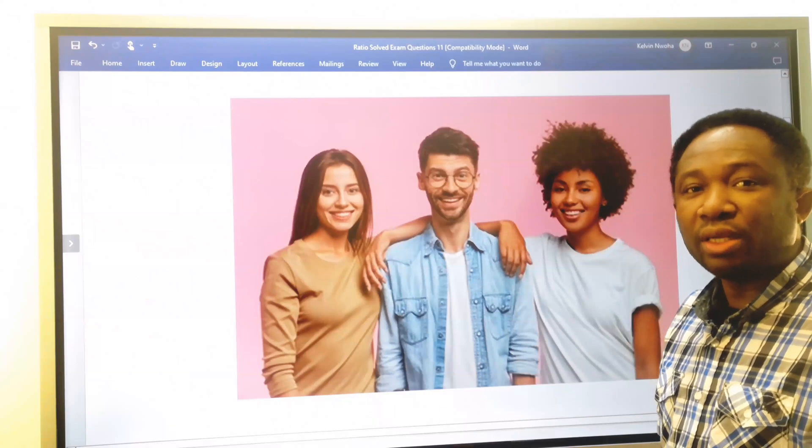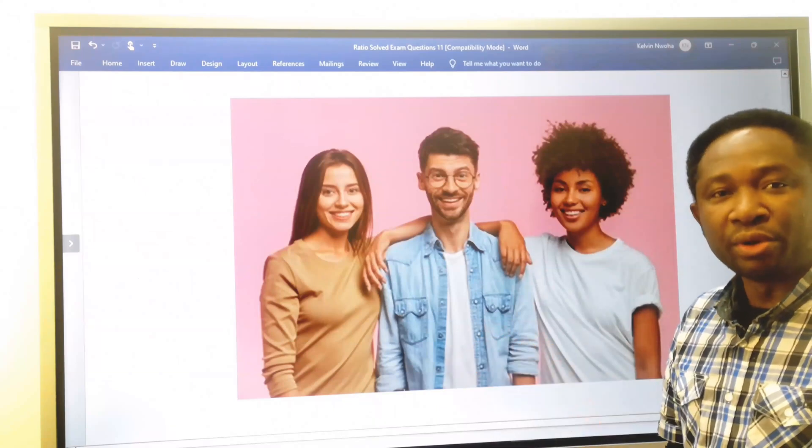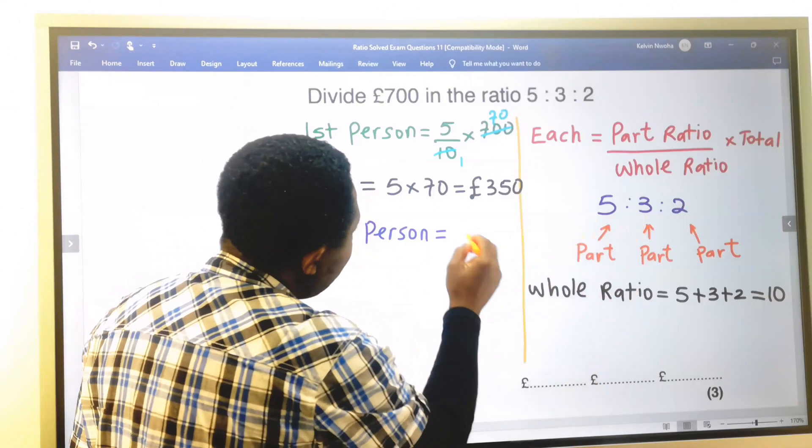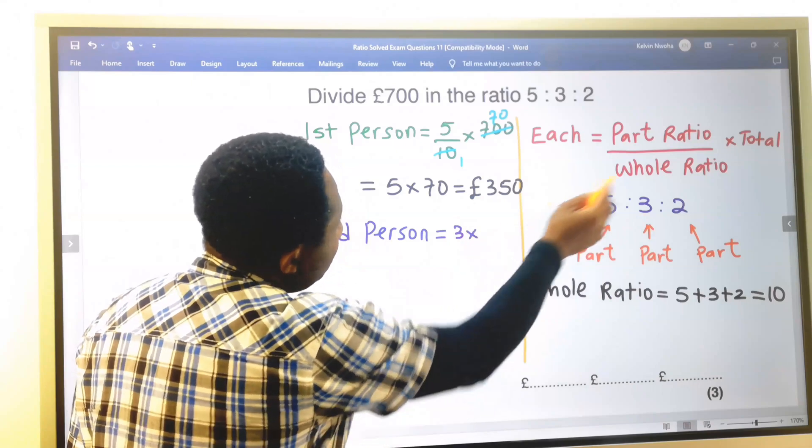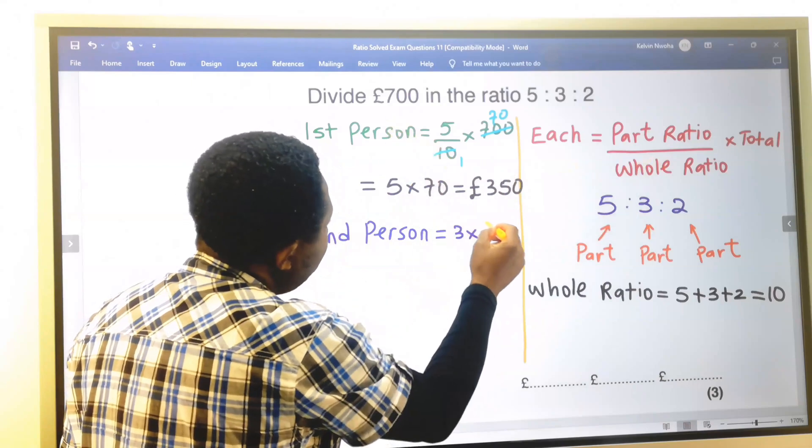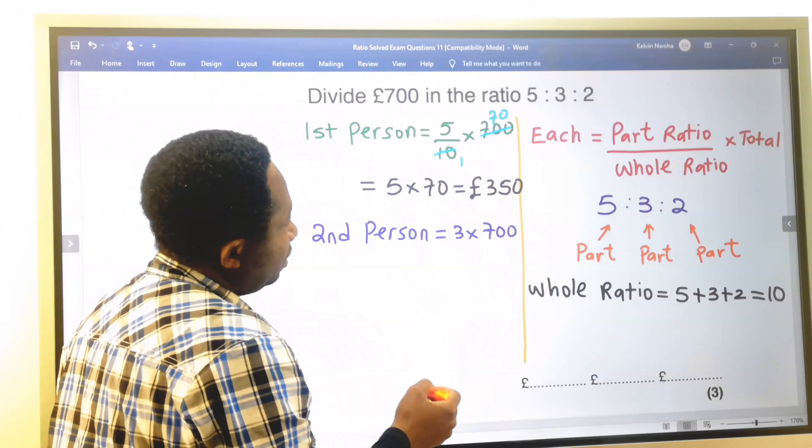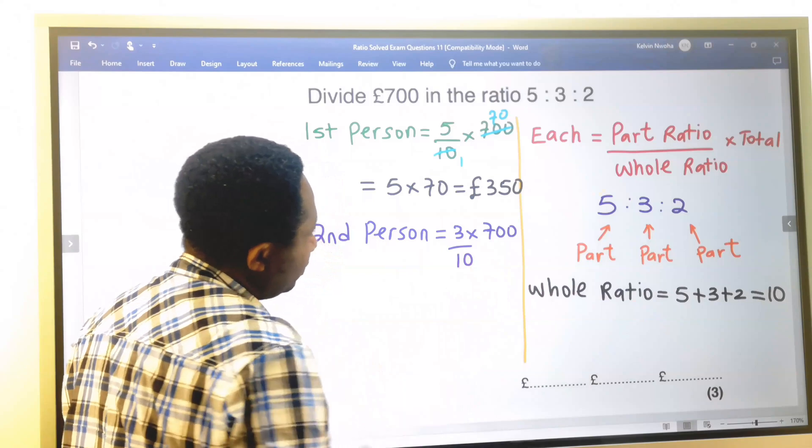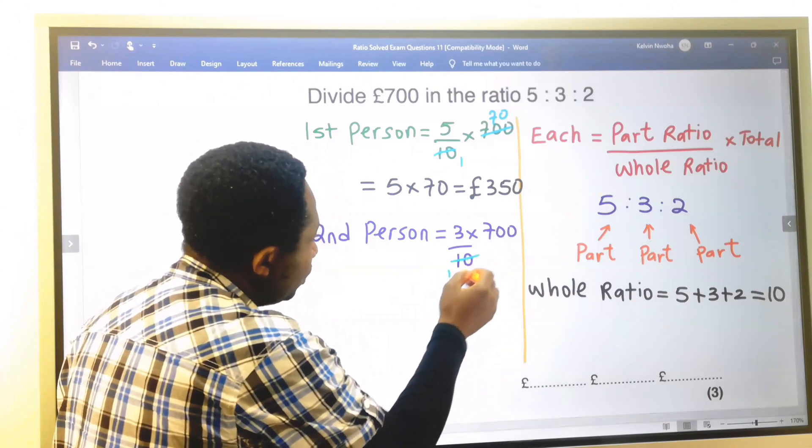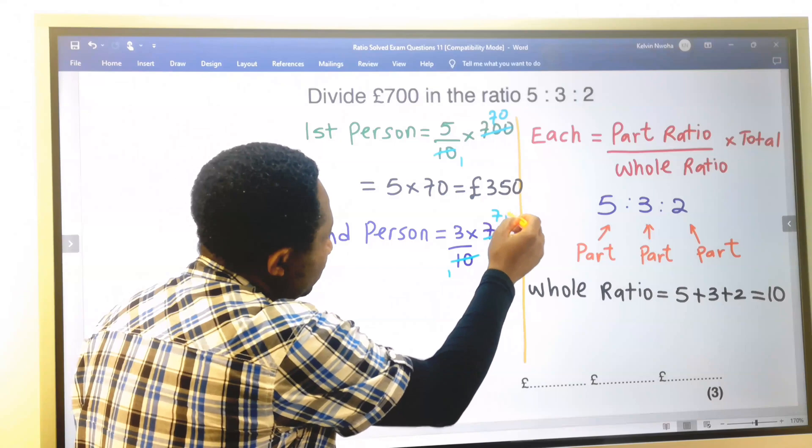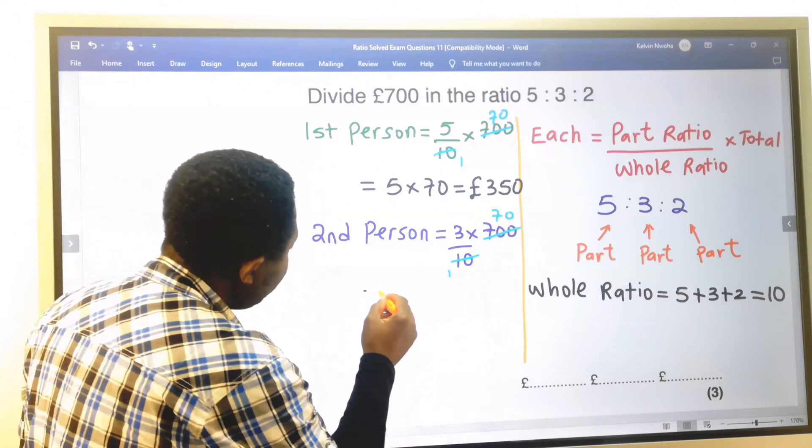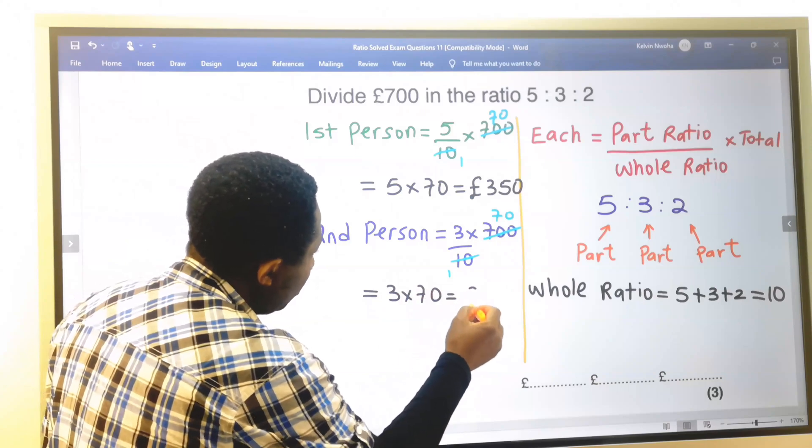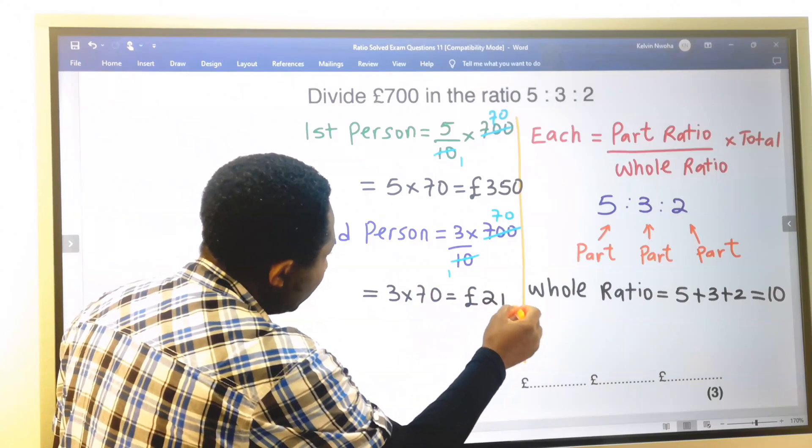We are going to calculate how much the second person will receive. The second person will get 3 times the total is 700, divided by the total ratio, which is 10. 10 here is 1 and 10 here is 70. And the second person will receive 3 multiplied by 70, which is 210 pounds.